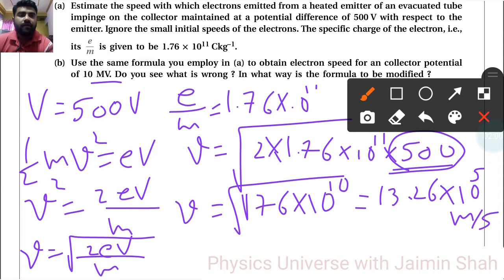You have to write 10 into 10 raised to 6 instead of this 500. Here whatever value we get that is our V and speed is increased because of this value. In what way is the formula to be modified?